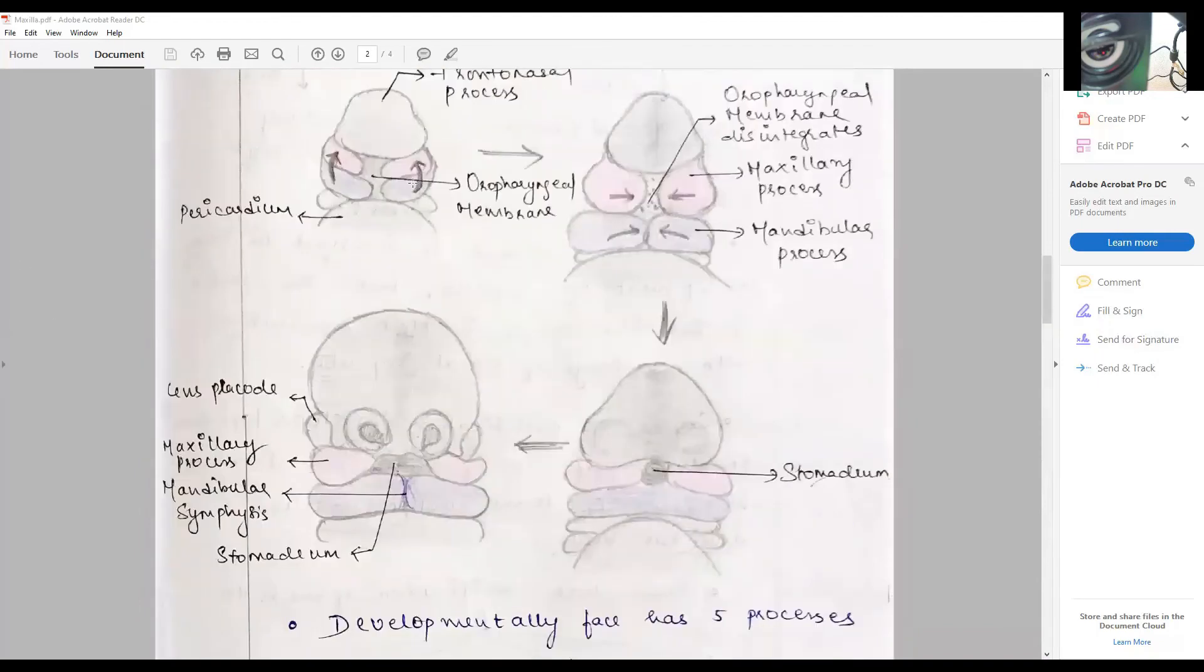How the maxillary process initially is formed by the upper movement, then downward movement, the descent of the tongue facilitating the movement or fusion of both the maxillary processes along the midline, the failure of which will highlight the formation of cleft.